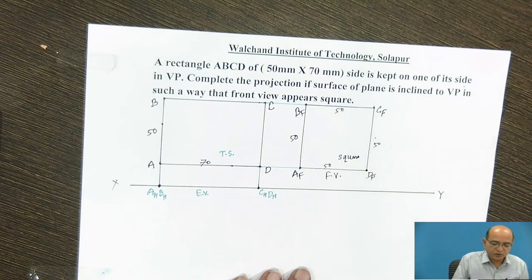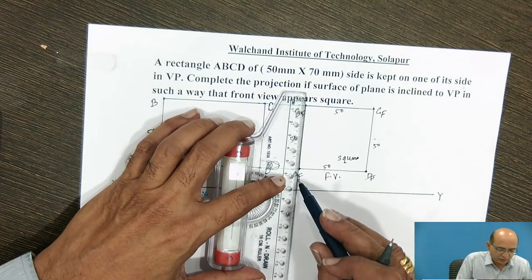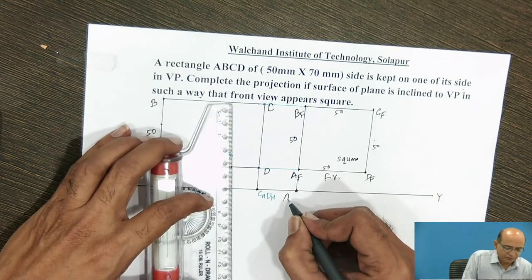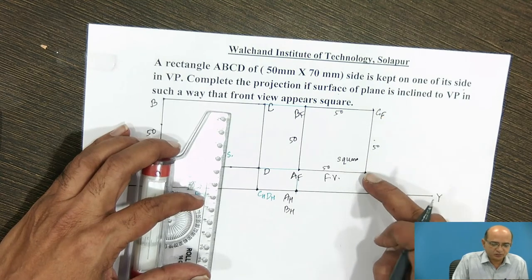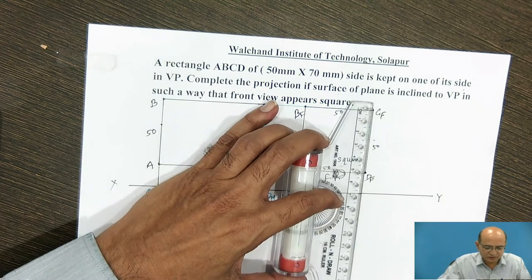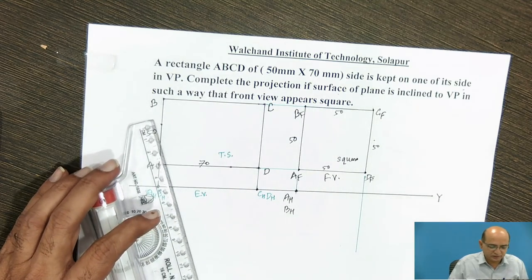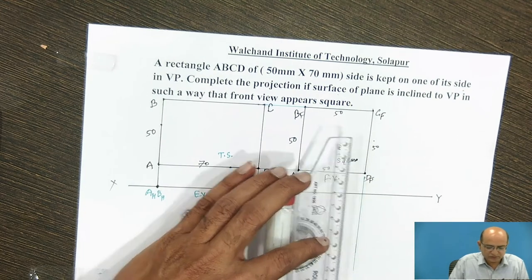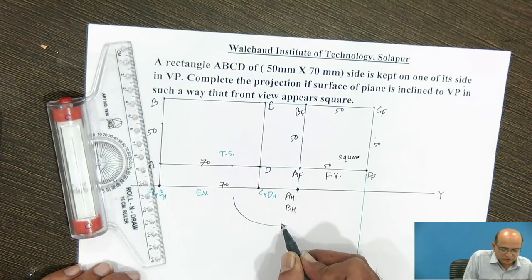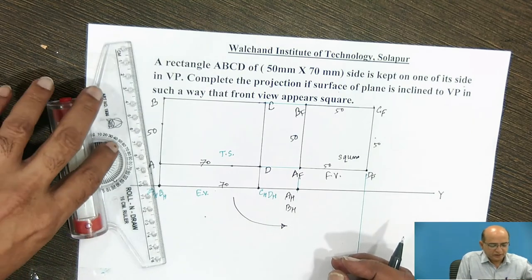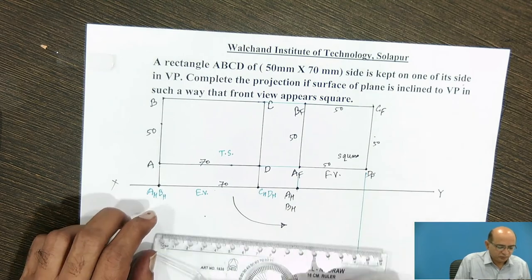Now, where to project or locate these points in the top view side: we take the projection of AB and on that projector we get the positions of AH and BH. To obtain the positions of CH and DH, we project the points from CF and DF downward, and on those projectors we locate CH and DH. For that, we mark the edge view length from the first top view to the second top view, because the edge view length remains the same when shifted.